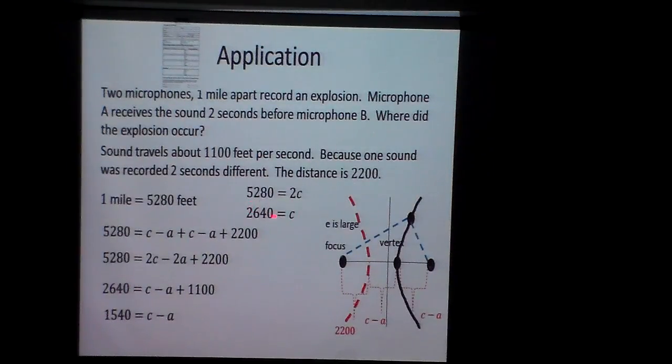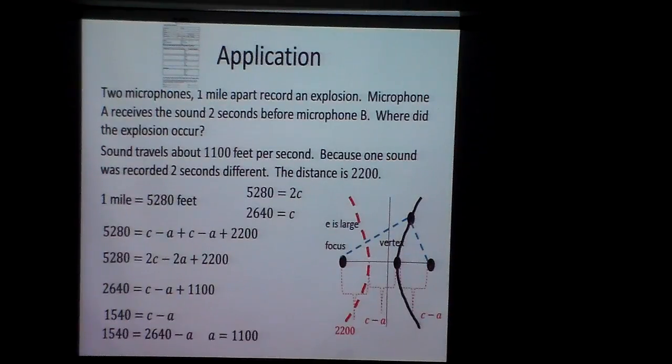Yet, don't I know C is 2,640? So let's replace that. And if I take the 2,640, basically, add A to each side, subtract 1,540, A is 1,100. So A is 1,100, C is 2,640.